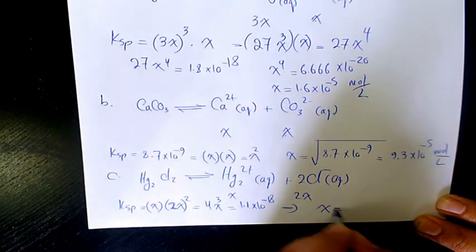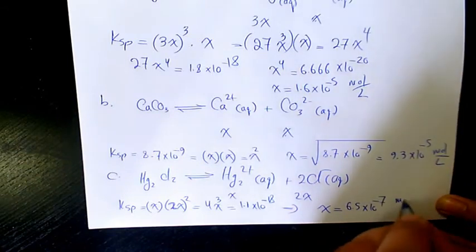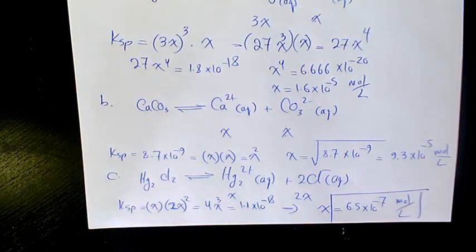Then we can find out the X, which is 6.5 times 10 to the power of negative 7 mole per liter. So that's going to be the molar solubility of this compound.